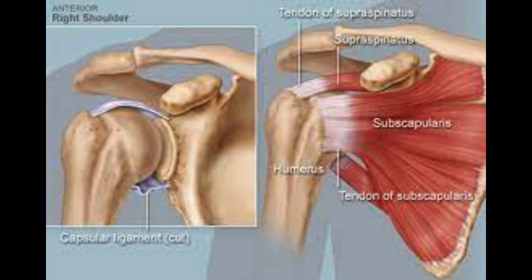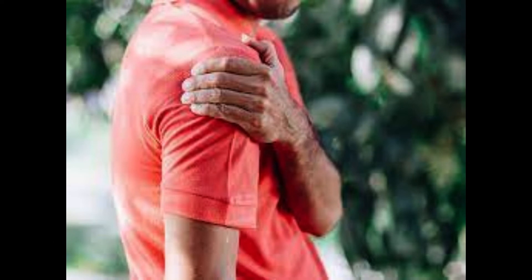3. Thoracic outlet condition. Thoracic outlet disorder (TOS) alludes to a gathering of conditions that pack the nerves and veins that pass between the collarbone and the principal rib. Individuals who have TOS might encounter deadness or shivering in a hand, as well as shortcoming in the neck or arm.